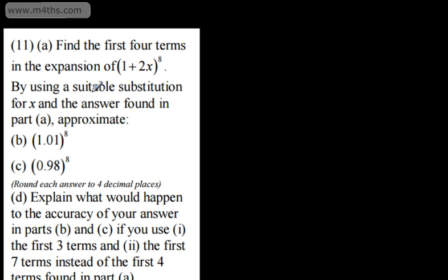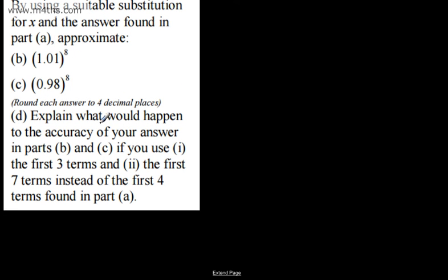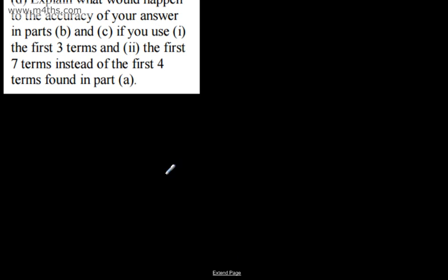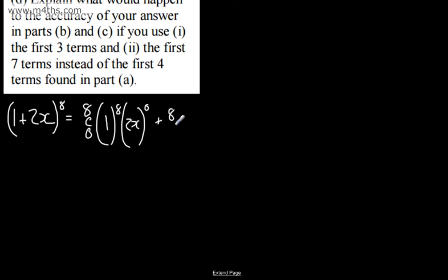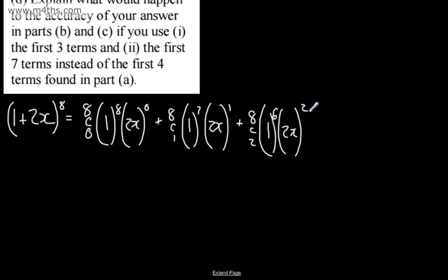This will be in ascending powers of x. We've got a number of different approaches. I'm going to use the NCR method to find the coefficients. So I'm going to write (1 + 2x)^8. This gives me 8C0, we'll have 1^8, and 2x^0. Then 8C1, 1^7, 2x^1. Then 8C2, 1^6, (2x)^2. Then 8C3, 1^5, (2x)^3, and then the other terms.